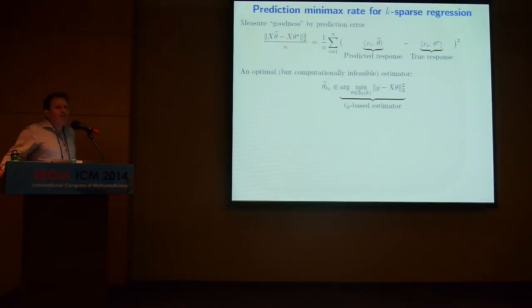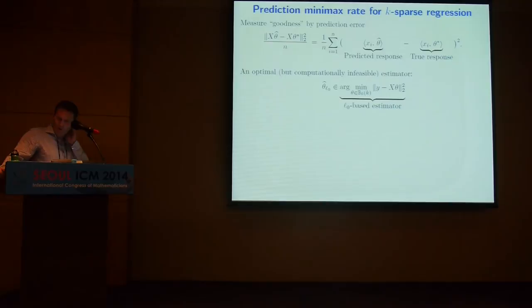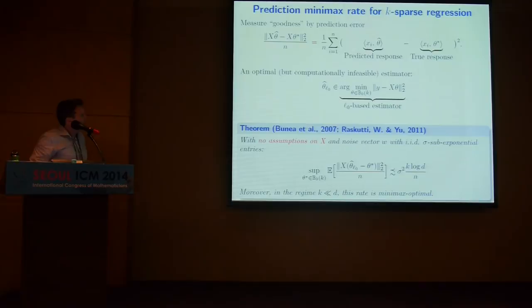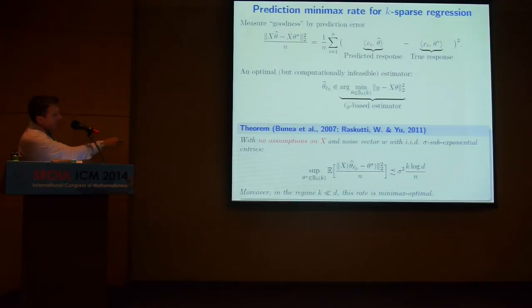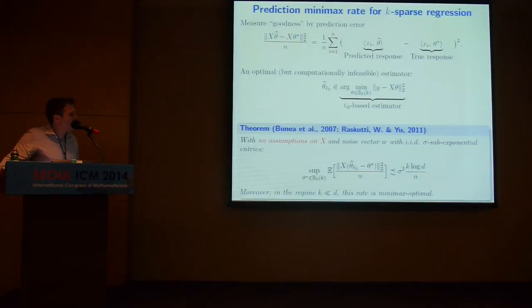To warm up, consider the classical minimax rate when computation is not a concern. The optimal but computationally infeasible approach is solving least squares over an L0 ball — minimizing over the non-convex set of vectors with at most K non-zeros. This is easy to analyze; it was done by Bunea et al. With no assumptions on X — no restricted isometry or incoherence needed — and a noise vector with reasonable tail conditions, in a uniform sense over K-sparse vectors, you can get an error scaling like noise variance times K log D over N. That's the minimax rate.